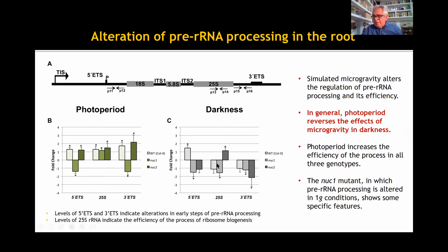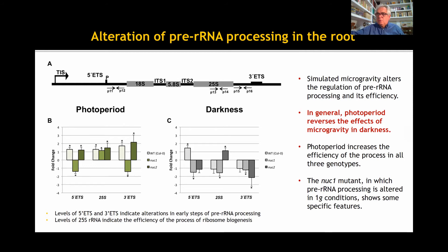The 25S rRNA accumulation was statistically greater in the NUC2 mutant in comparison with the 1G control condition. In summary, photoperiod reverts the effects of microgravity on the processing of pre-ribosomal RNA, which is decisive for the accurate production of ribosomes and consequently for protein synthesis and cell growth.